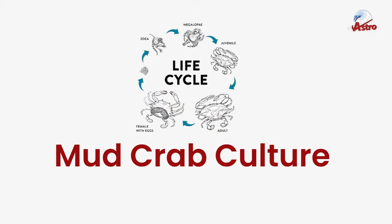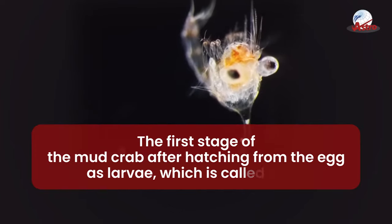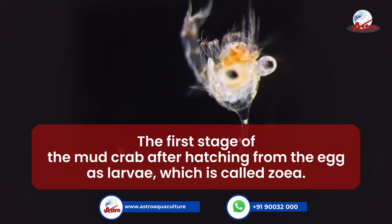Life Cycle of Mud Crab Culture. Stage 1: Zoea. The first stage of the mud crab after hatching from the egg as larvae is called zoea.